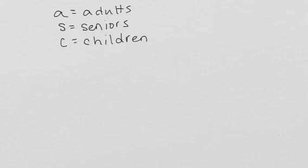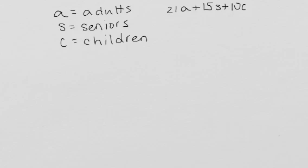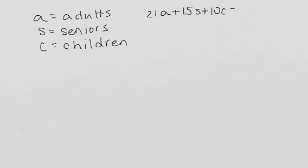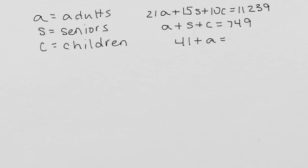So what I know is that the revenue, $21 for the adults, $15 times each senior citizen, and $10 for each child, and that totaled $11,239 in one equation. I know that the adults plus the seniors plus the children all together totaled 749 tickets sold. And I also know that if I added 41 to the number of adults, that would equal the number of children.